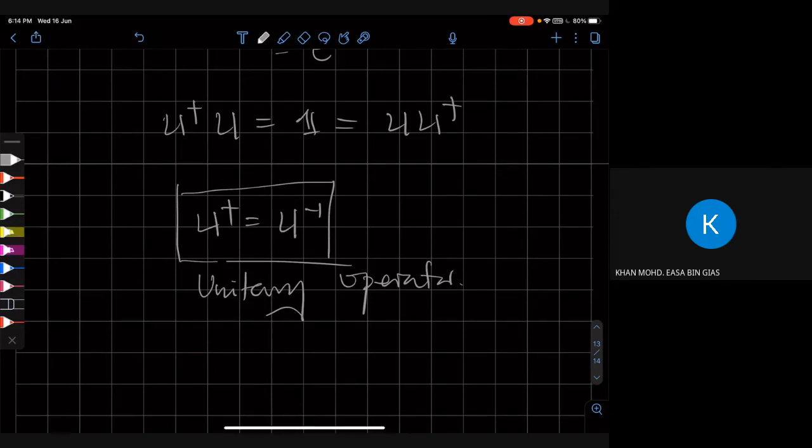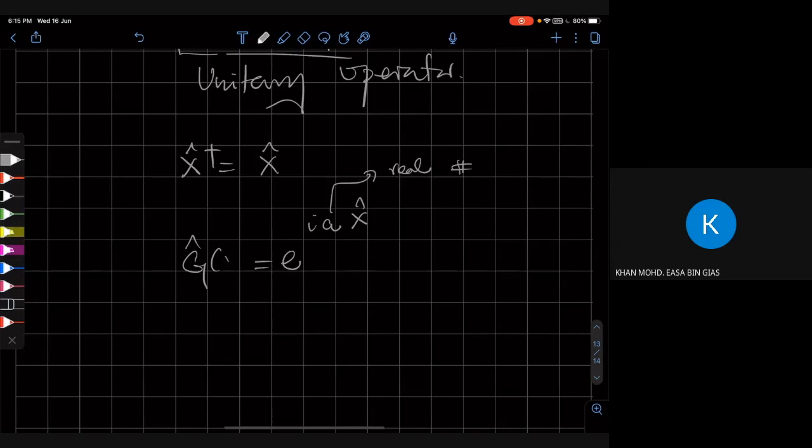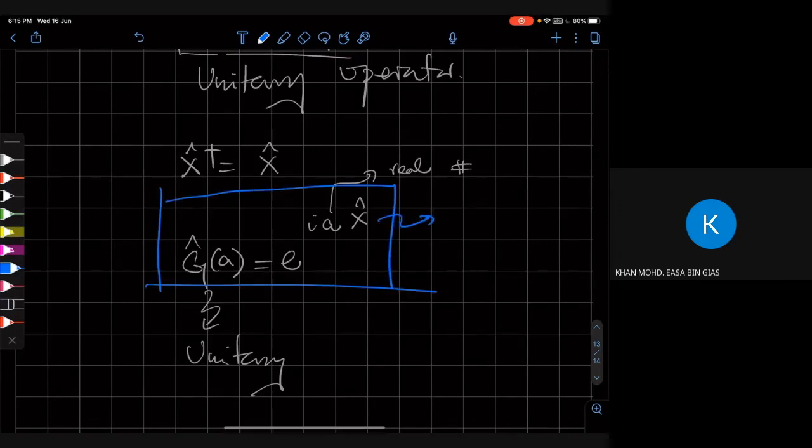So given a Hermitian operator, you can always create a unitary operator in the following way. If you have a Hermitian operator, say X, then you can exponentiate it with a real number a - so this is e^(iaX). Then this operator, which is a function of a, is going to be a unitary operator. So that's the relationship you have between unitary operator and Hermitian operator. So this is then called a generator.